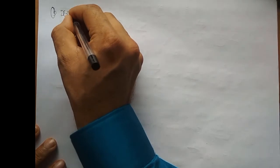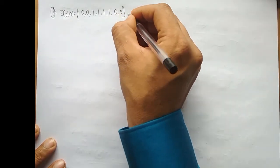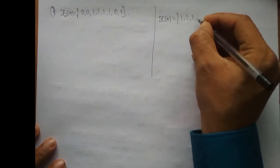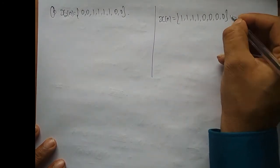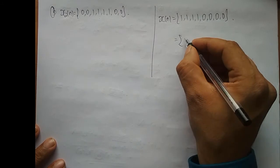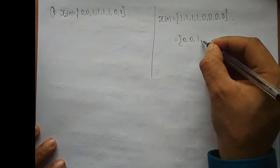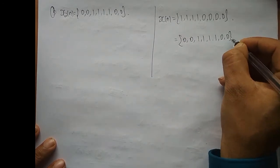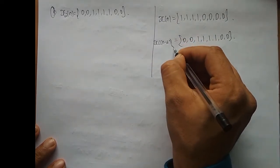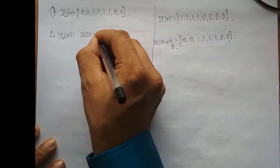Now for part b: X2 of n is 0, 0, 1, 1, 1, 1, 1, 1, 0, 0. What is the relationship between X2[n] and X[n]? If I shift X[n] right two times, these two zeros come at the beginning and the rest of the samples go to the other side, giving 0, 0, 1, 1, 1, 1, 0, 0. This is X of (n-2) mod 8. Therefore, X2[n] = X(n-2) mod 8.